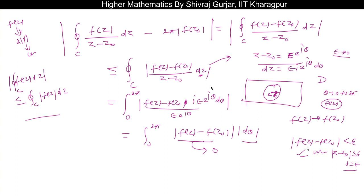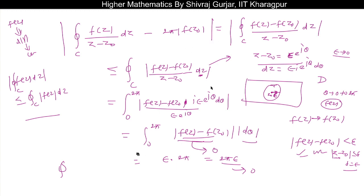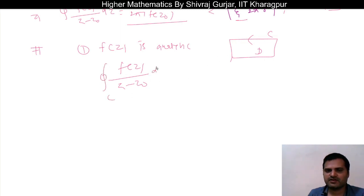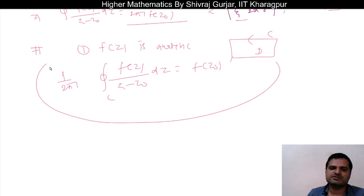This is the condition of continuity of f(z) at z = z₀. So |f(z) minus f(z₀)| < ε, and integrating from 0 to 2π gives 2πε. As ε approaches 0, this quantity approaches 0. Since this expression cannot be negative, it must equal 0. Therefore the integral of f(z)/(z minus z₀) dz along C equals 2πi·f(z₀). This completes the proof of Cauchy's Integral Formula.